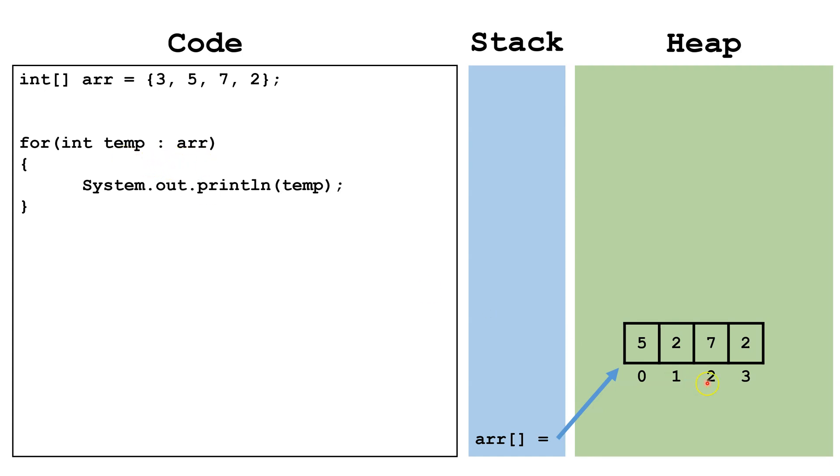So the first time through temp is going to equal 5, second time 2, third time 7, and fourth time 2. This will print out the value of temp so we're going to print out 5, 2, 7, 2.